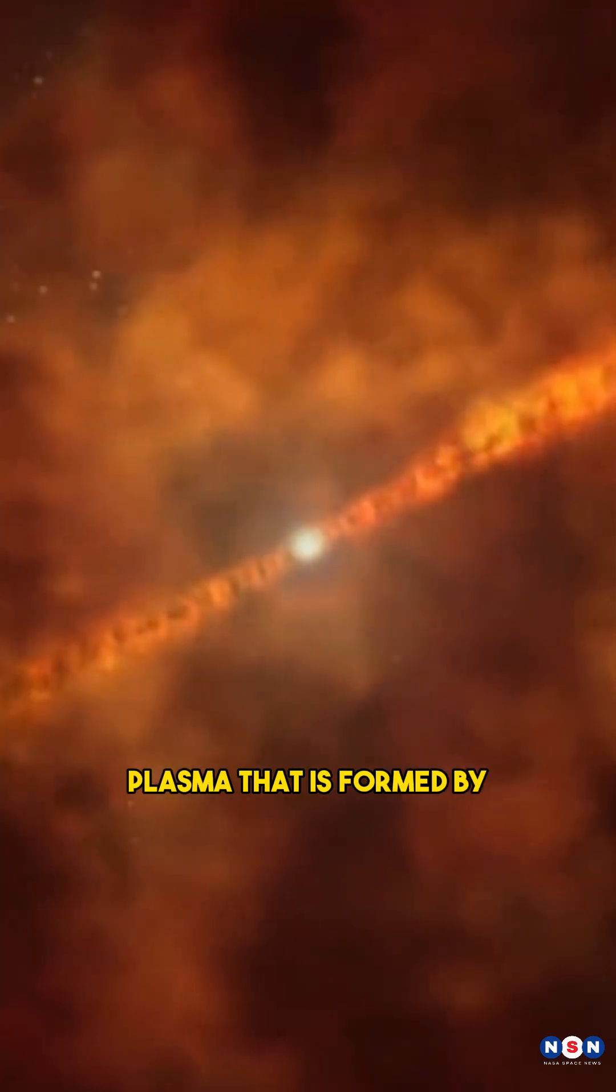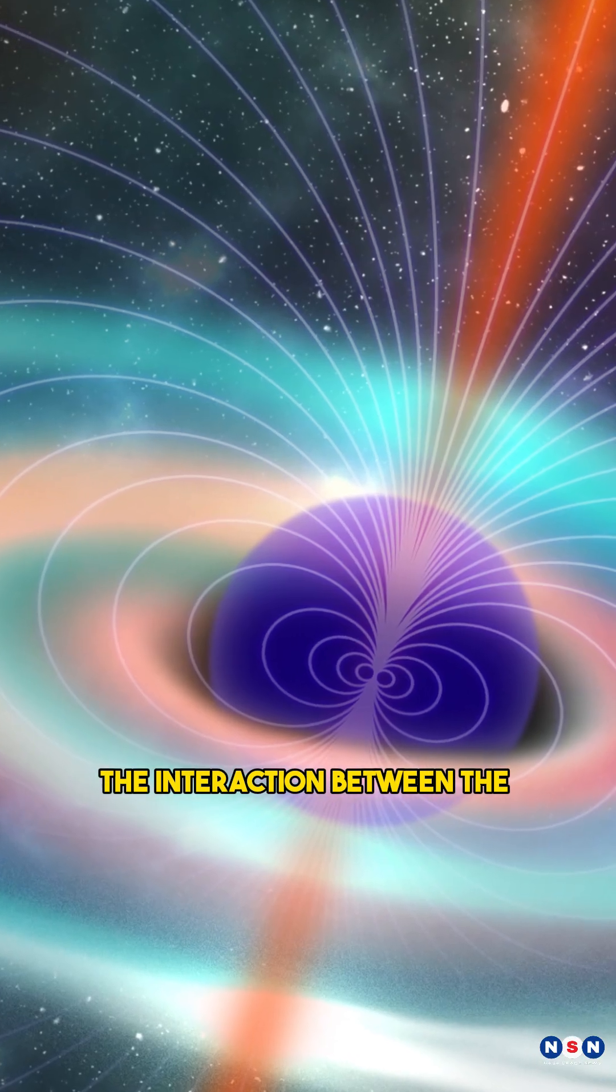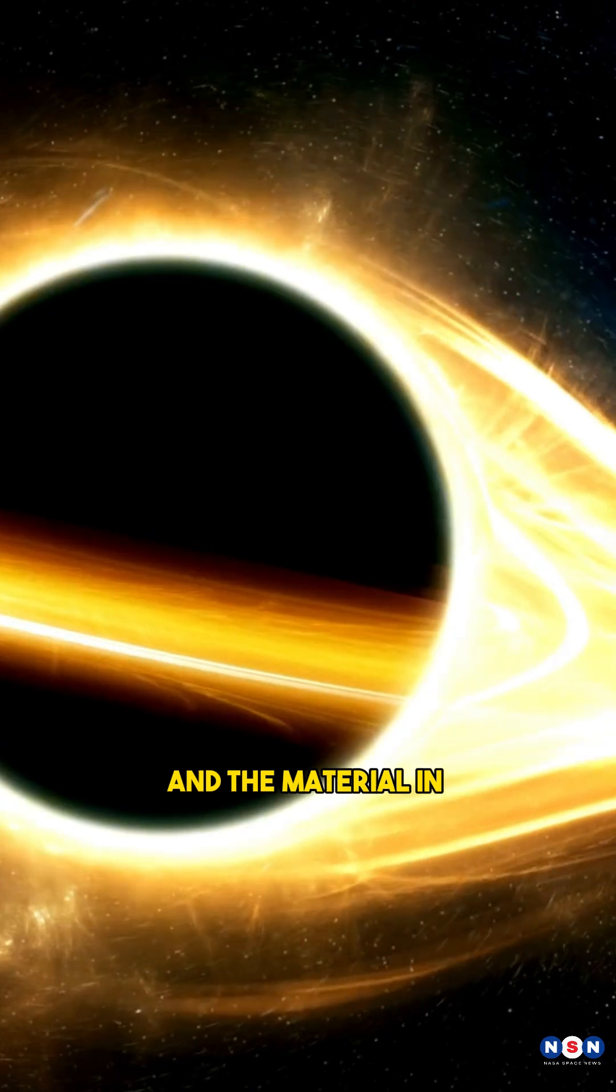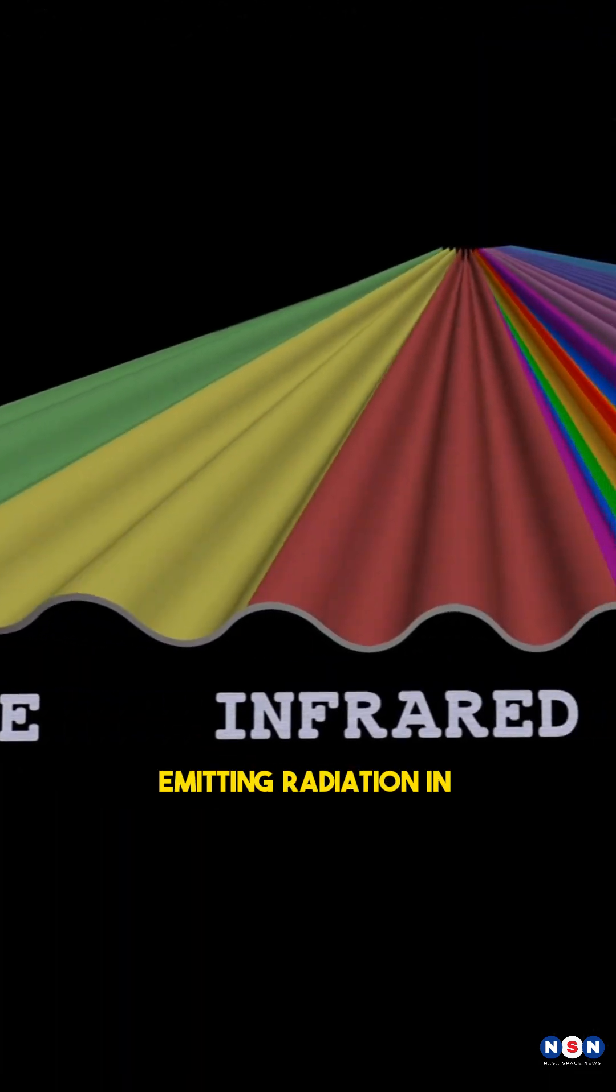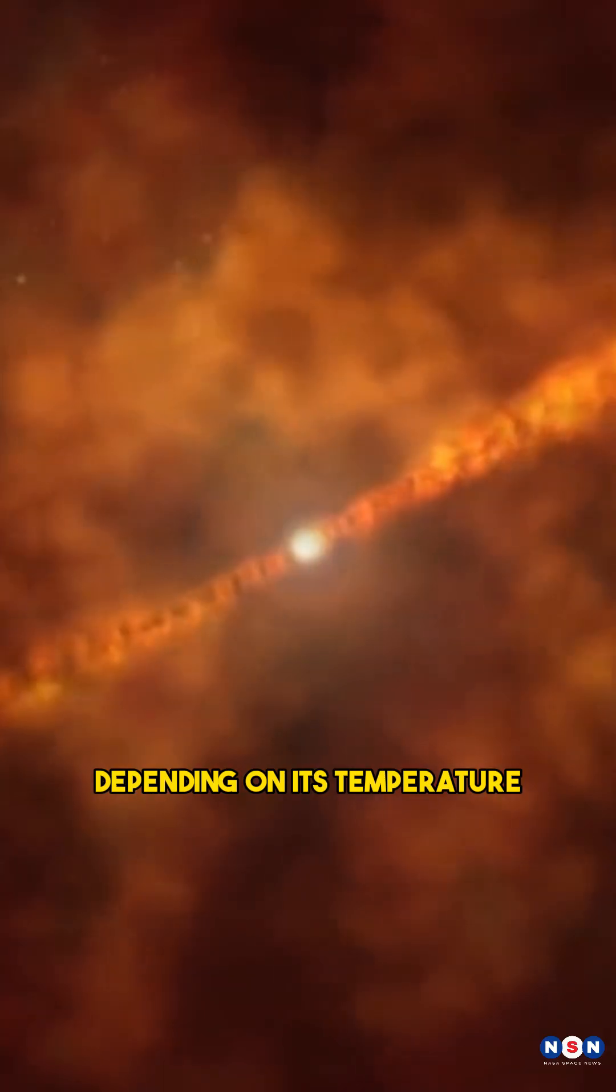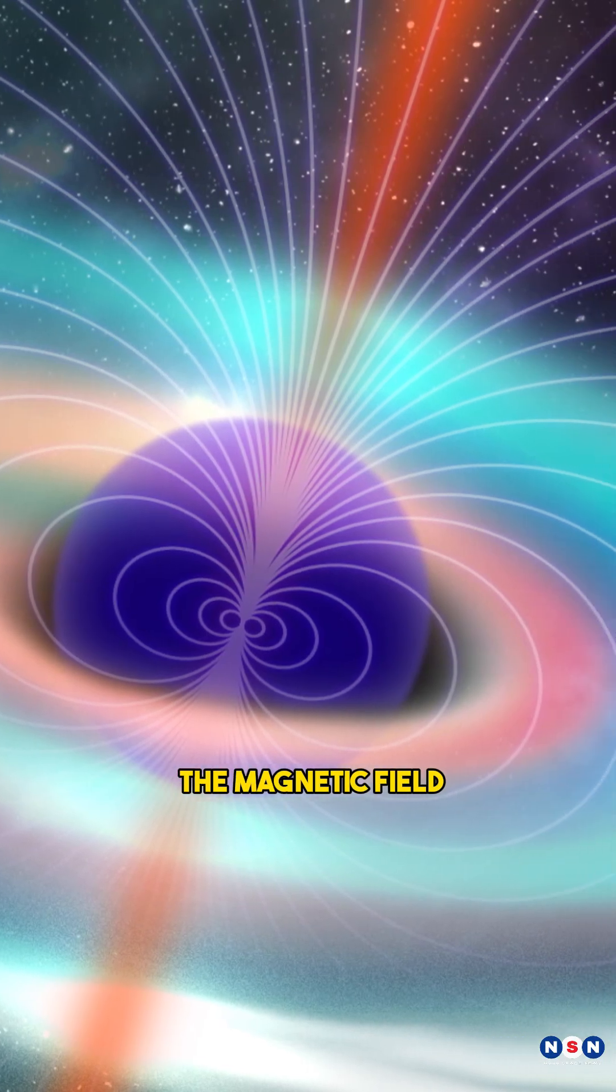It is a hot bubble of plasma that is formed by the interaction between the black hole's magnetic field and the material in its accretion disk. And the blob is emitting radiation in different wavelengths, depending on its temperature and the strength of the magnetic field.